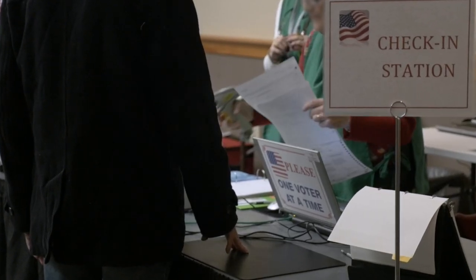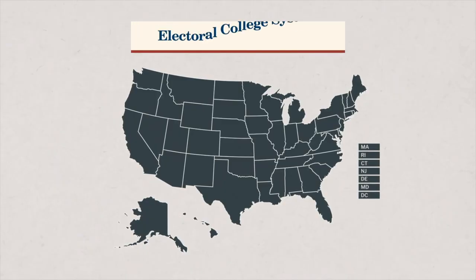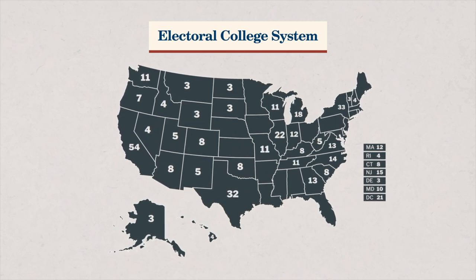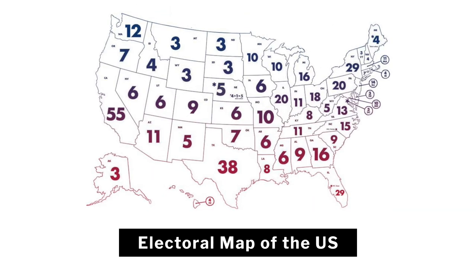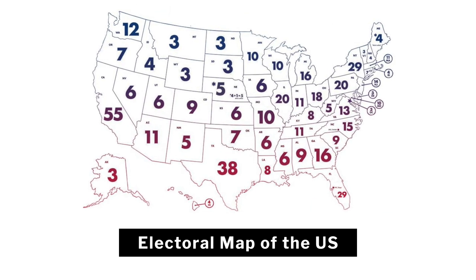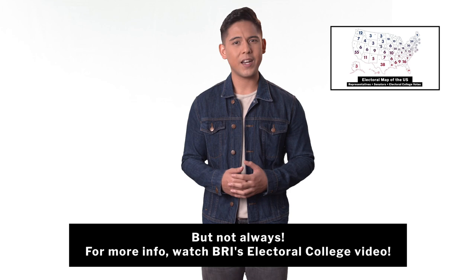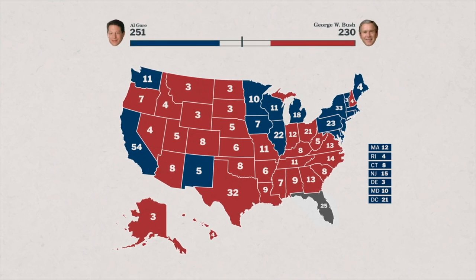On November 7, 2000, Americans went to the polls to cast their ballots for the next president. The United States has what's called an Electoral College. Each state is assigned a number of electors based on their number of representatives and senators. Whichever candidate receives the most votes within each state wins the state's popular vote, which determines the winner of that state's electors, who will go on to cast ballots for the candidate to which they were pledged. Candidates need to win at least 270 of the 538 electoral votes in order to become president.